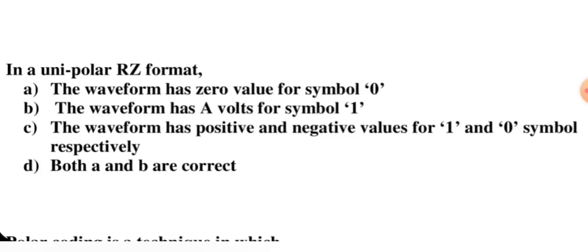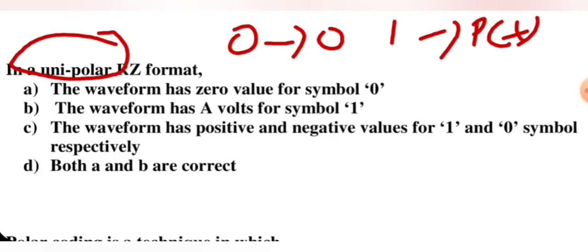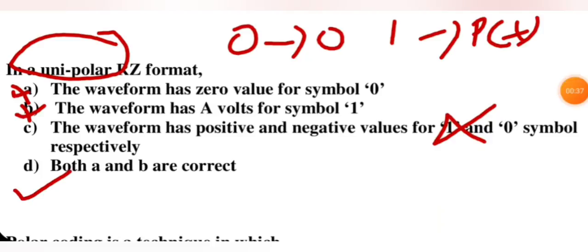In a unipolar RZ format: the waveform has 0 value for symbol 0 — obvious since this is unipolar, so zero transmits zero voltage. The waveform has a positive voltage for symbol 1 — yes, correct. Both A and B are correct. The waveform having both positive and negative values is wrong for unipolar. Since both A and B are correct, option D is the correct answer.